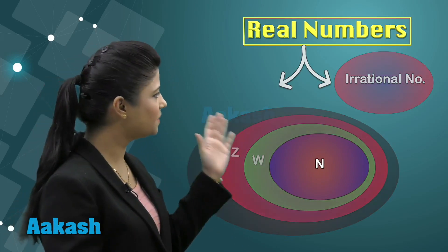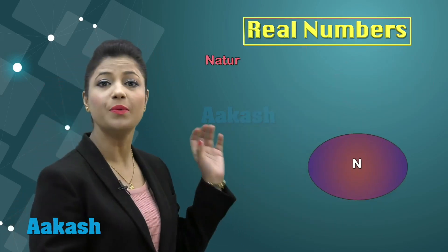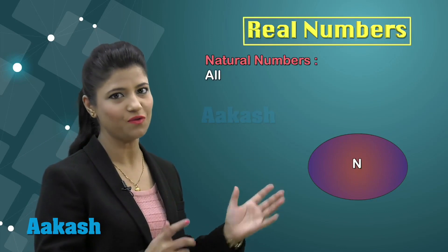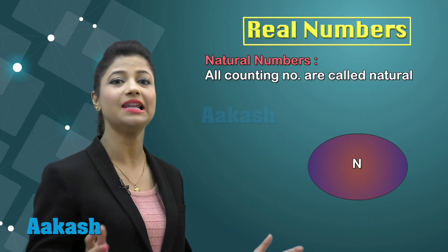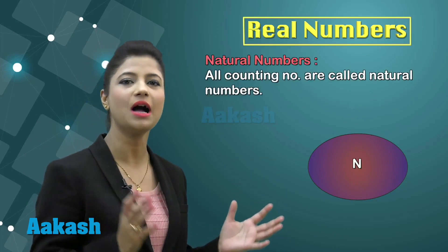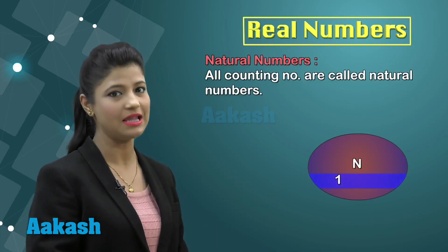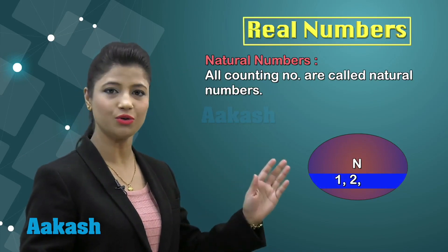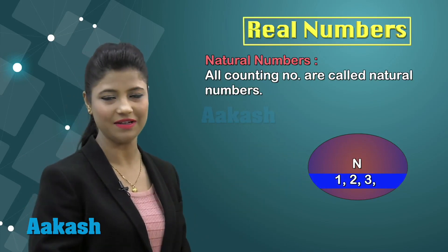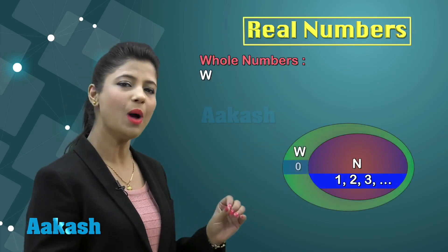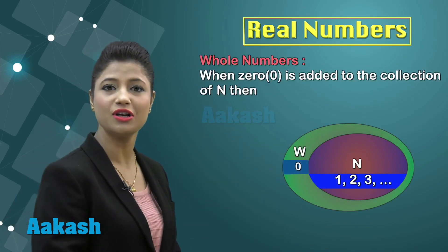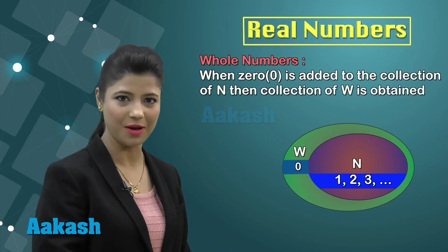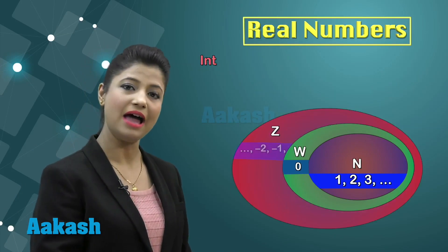We have N representing the collection of natural numbers, which is the collection of all counting numbers like 1, 2, 3, and so on until infinity. When you add 0 to this collection of natural numbers, you obtain the collection of whole numbers.